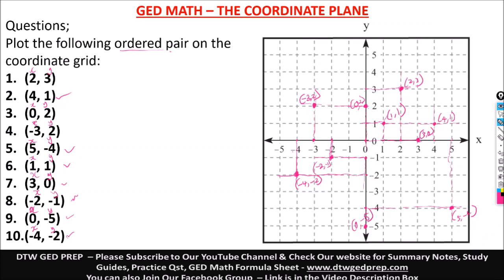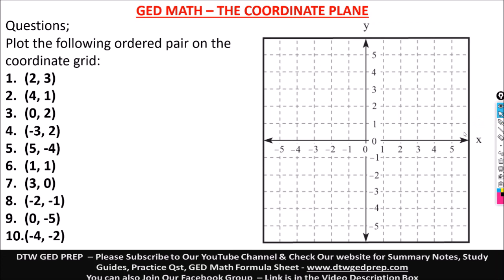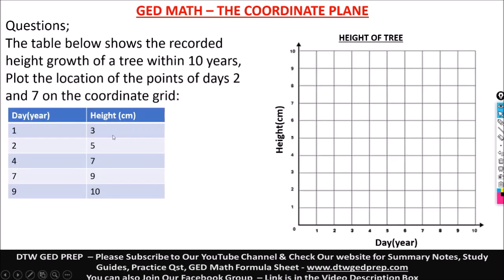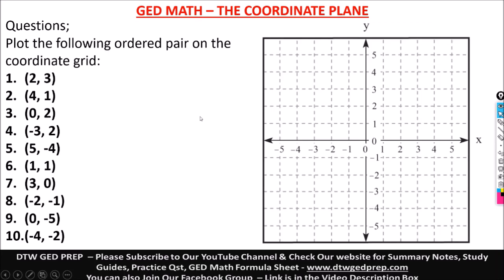You can see this is how you plot ordered pairs on your coordinate grid. Now let me take you through a likely practice question — an exam question that you can get on your GED. It says the table below shows the recorded height growth of a tree within 10 years. Plot the location of the points of days two and seven on the coordinate grid. In your GED, it won't give you a direct question like this — it will add some text. Don't be confused about the text and the big table, don't be tense.